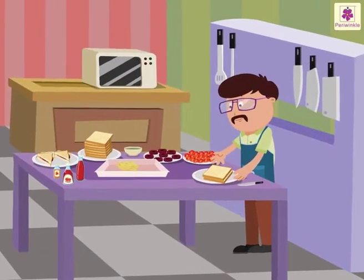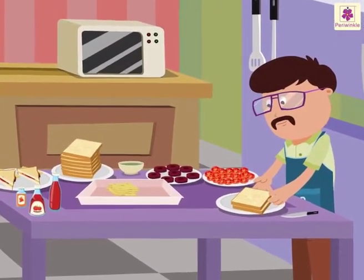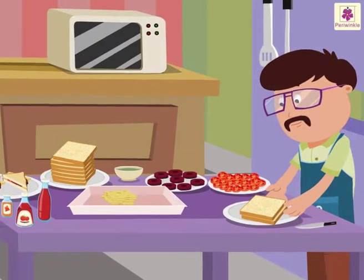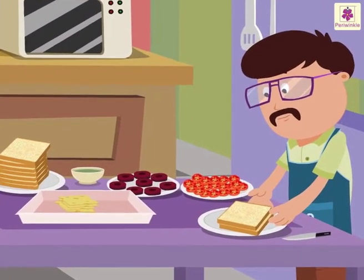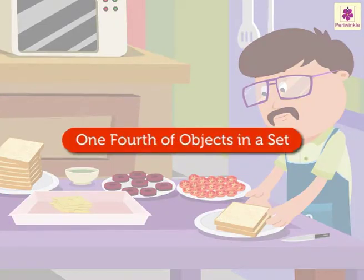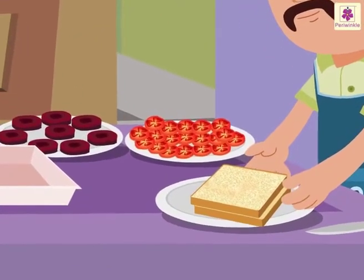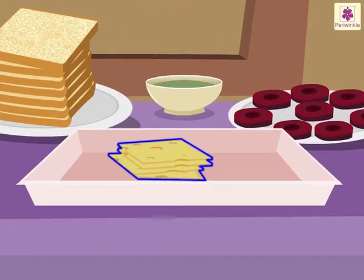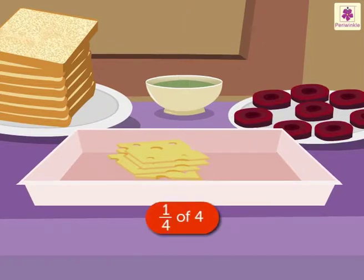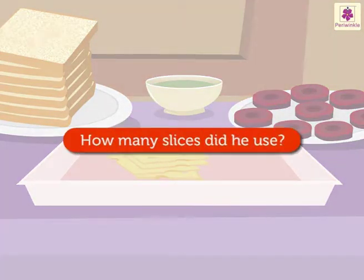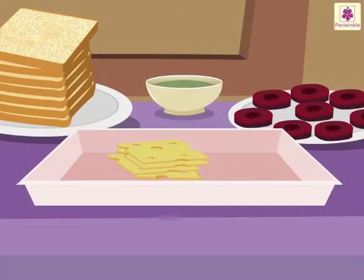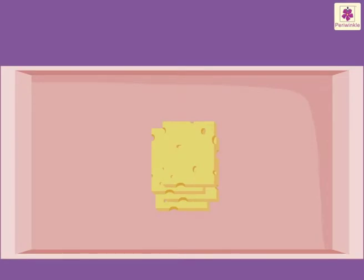Let us go to Uncle Sam's shop again. He is making sandwiches. Let us see how he makes them and also learn about one-fourth of objects in a set with him. Uncle Sam is making his yummy vegetable cheese sandwich. He has four cheese slices. He uses only one-fourth of the cheese slices in the sandwich. Let me show you how to find one-fourth of objects in a set.